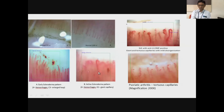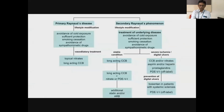This is an active scleroderma pattern, where you have hemorrhages and giant capillaries. Another patient with psoriatic arthritis shows tortuous capillaries, illustrating the importance of capilloroscopy in identifying underlying CTDs.